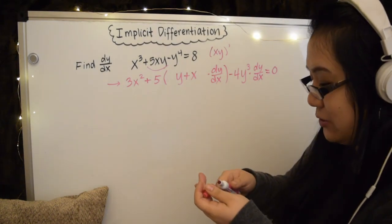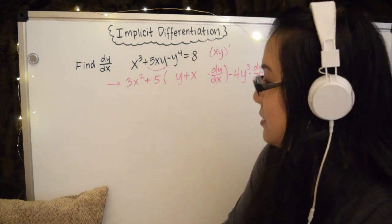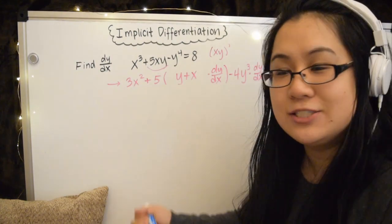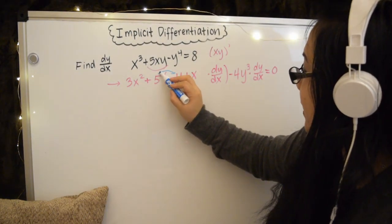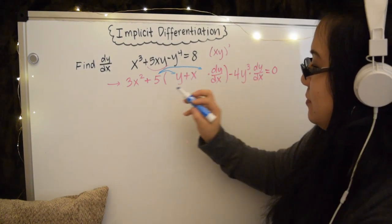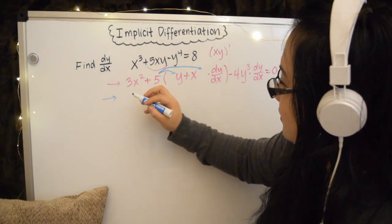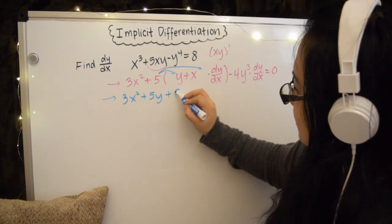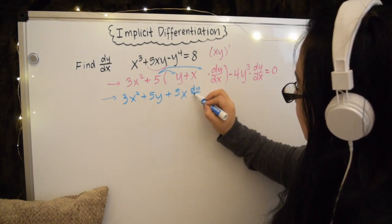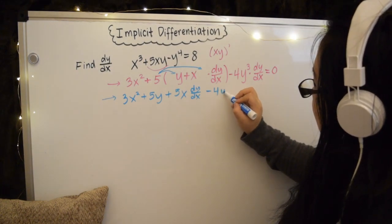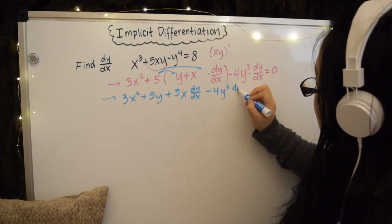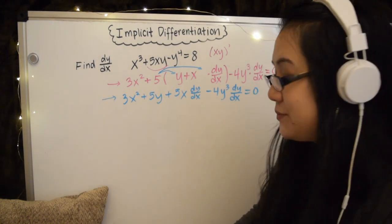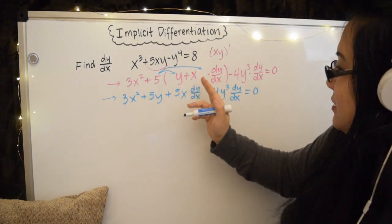But now that we're going to try to solve for dy/dx, this is the same as before. We can do this algebraically. But since I'm going to try and get this dy/dx on this side, I'm just going to go ahead and distribute this 5 back out since I'm going to be separating these terms. So I have 3x squared plus 5y plus 5x dy/dx minus 4y cubed dy/dx equals 0.